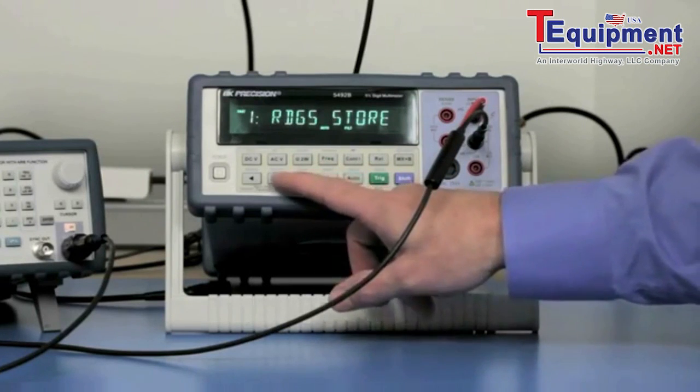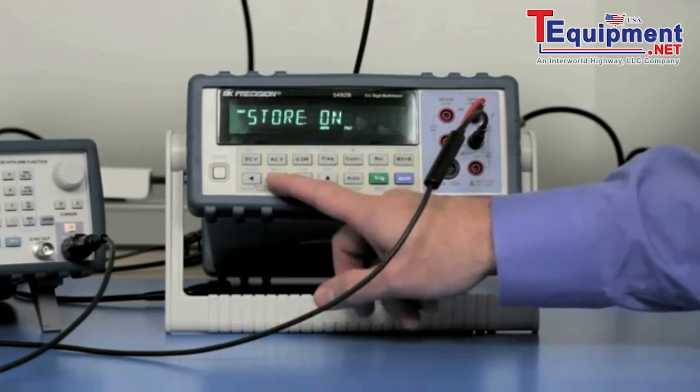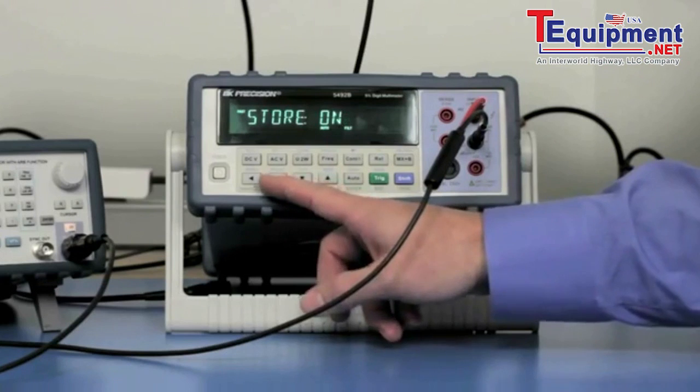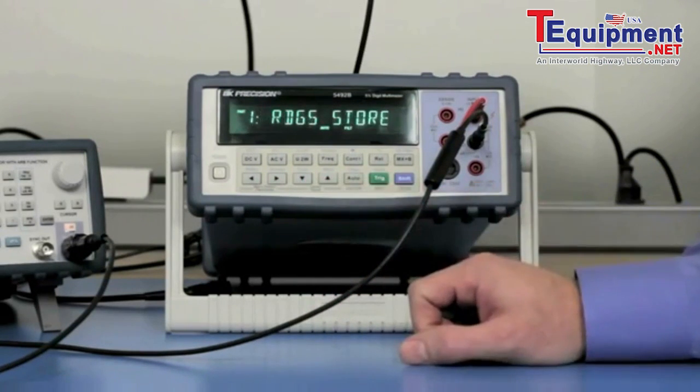So you press the down button. And the left or right buttons will cycle through on and off. So we turn that on and press enter. And it'll say change stored.